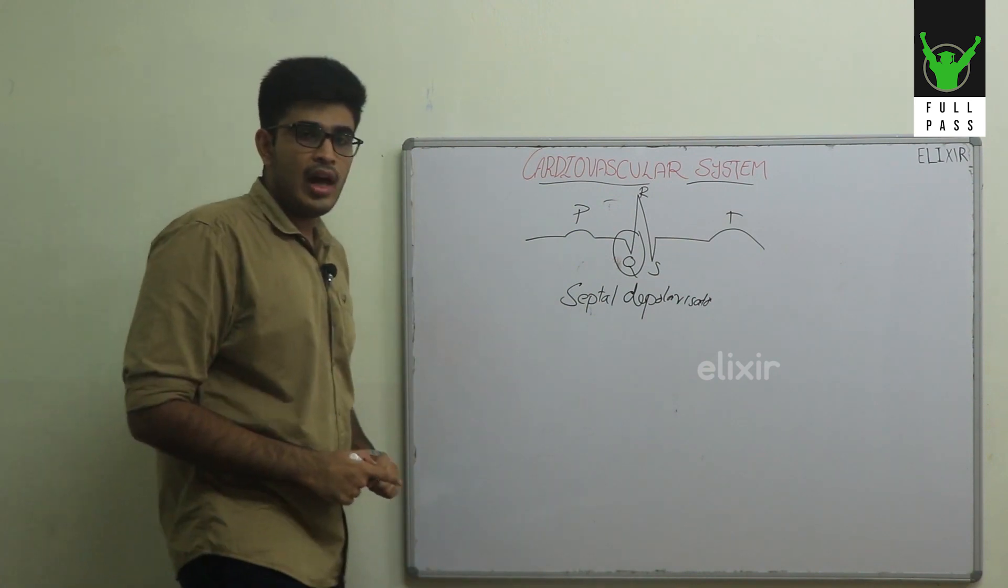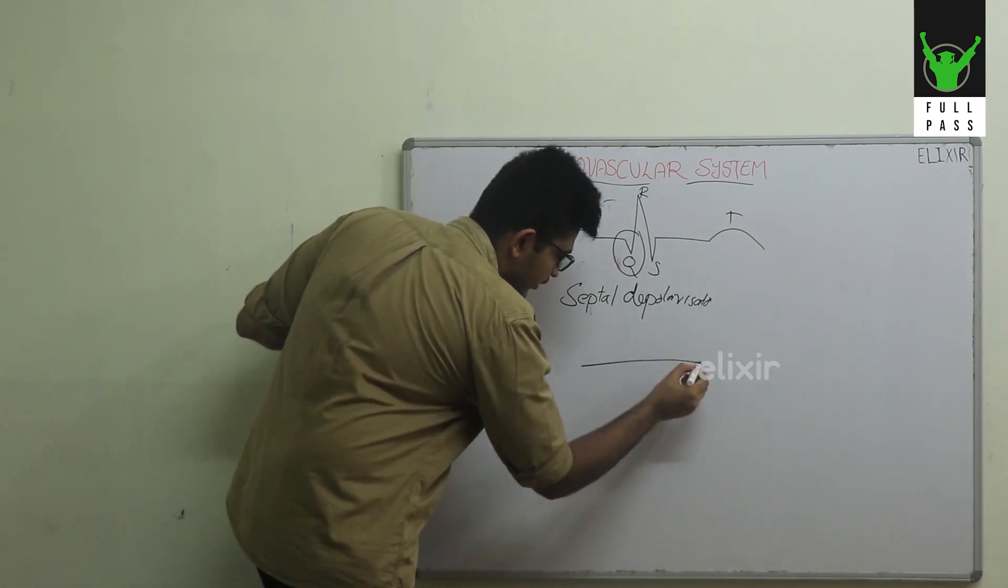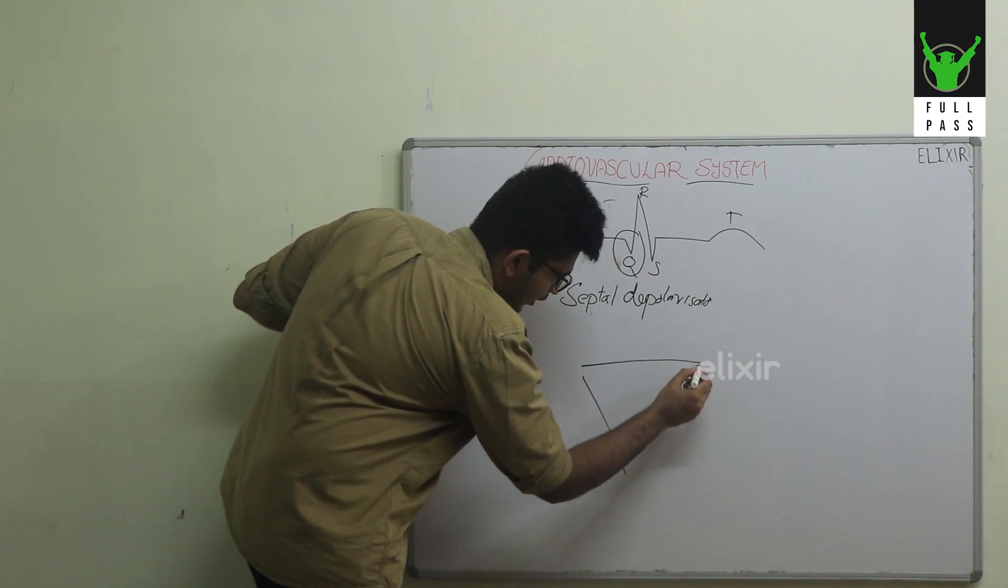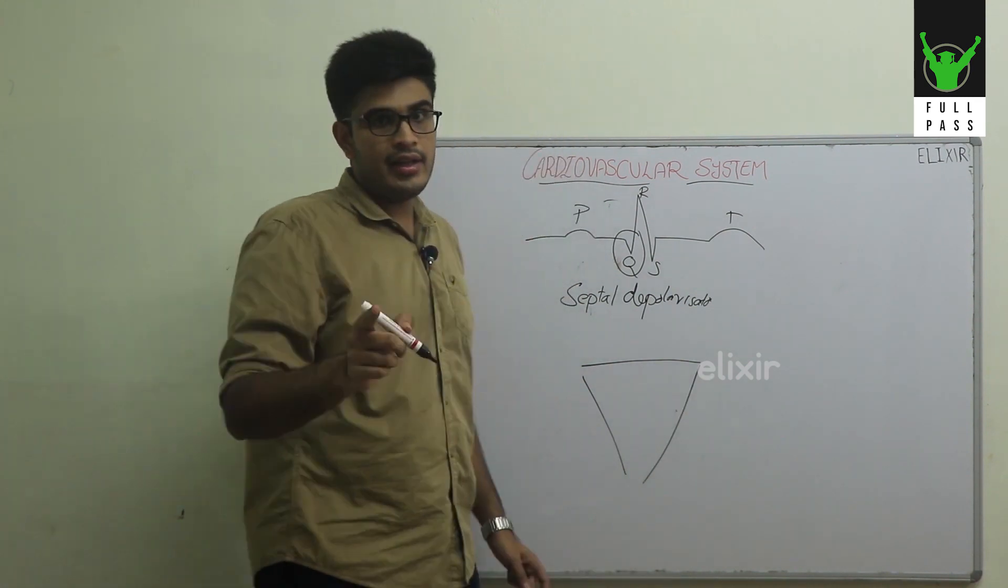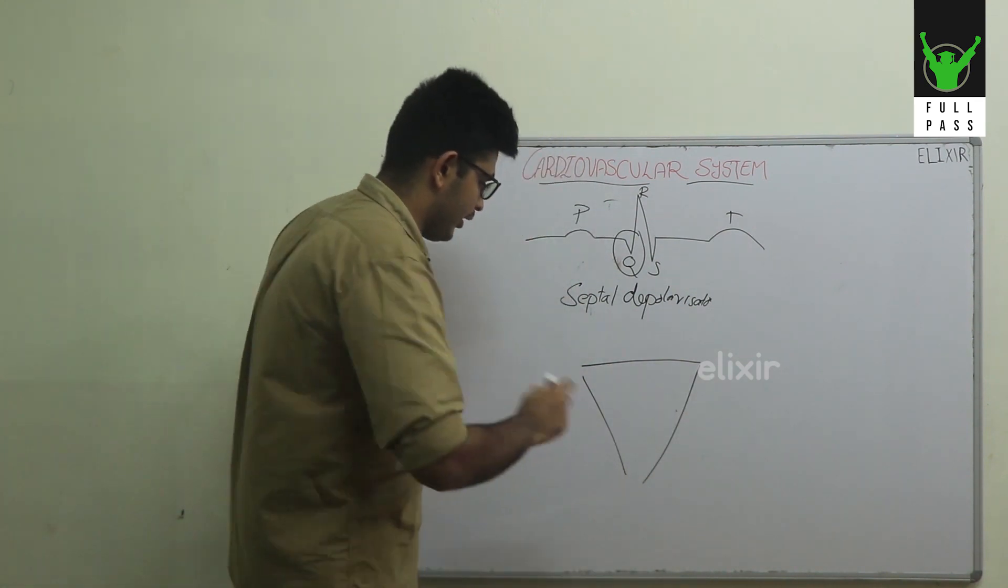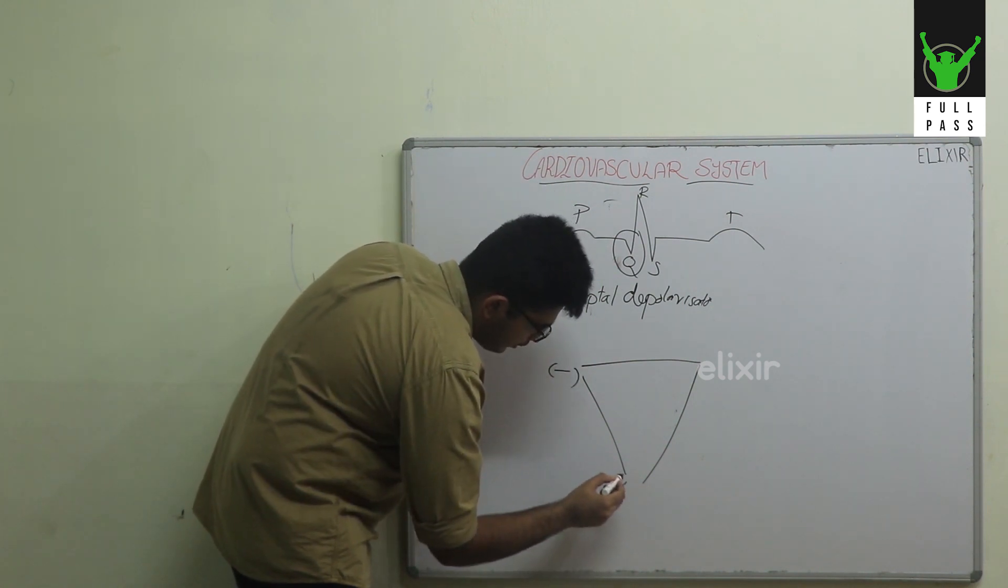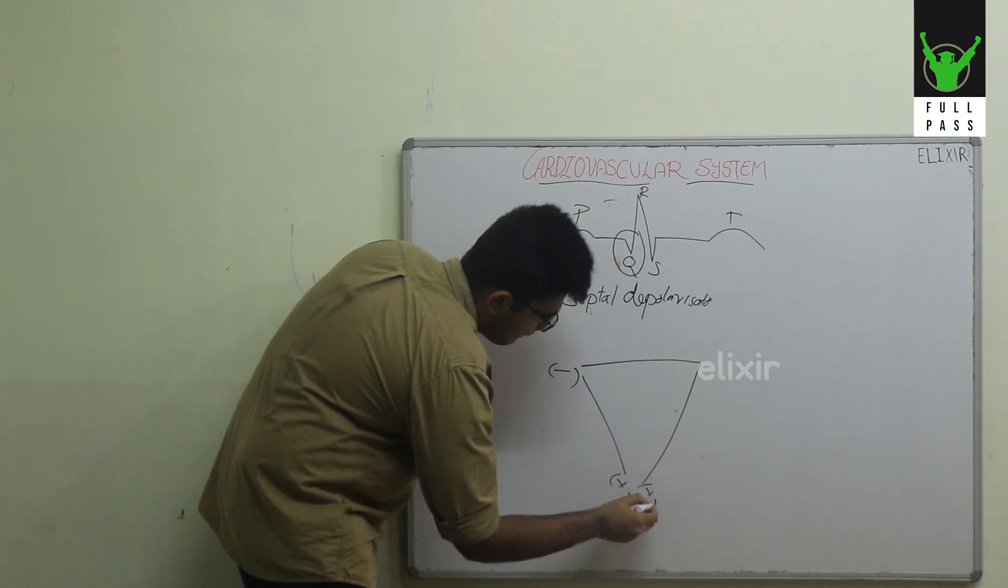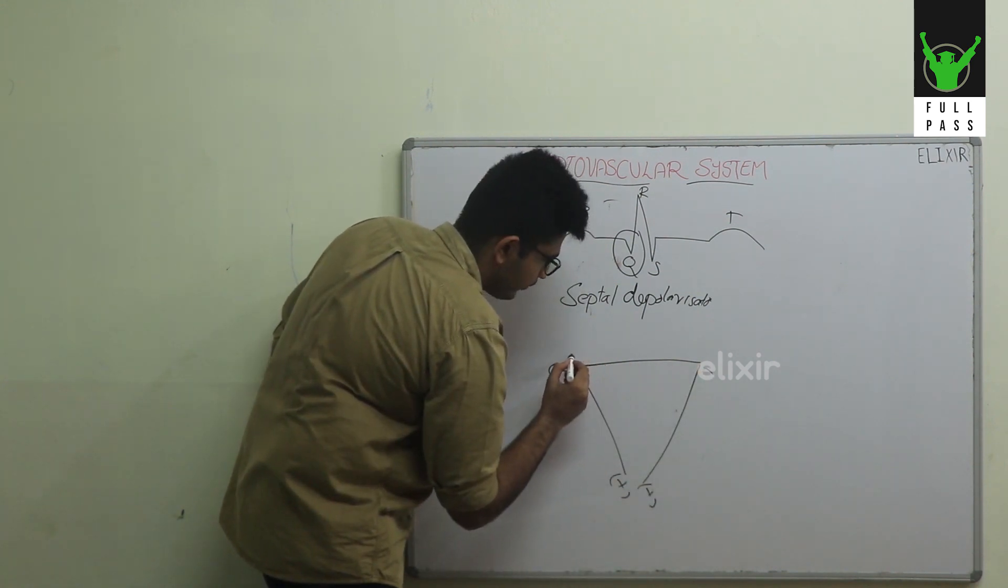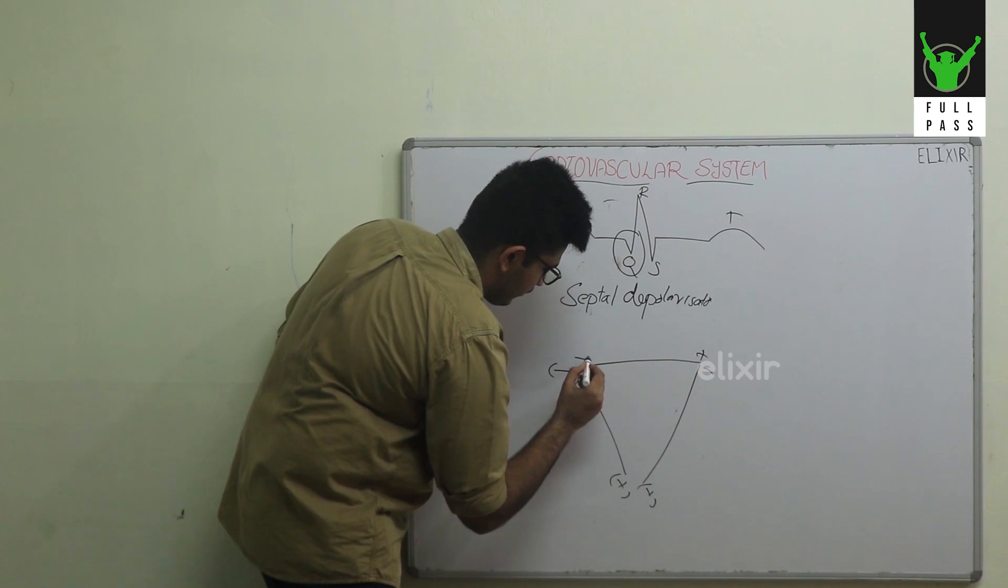For that, you have to know about the Einthoven triangle. Let's look at the various leads. Where are the bipolar leads in the Einthoven triangle? So this is negative, this is positive, positive.